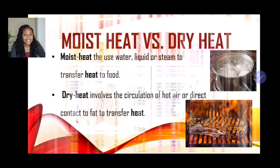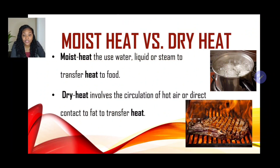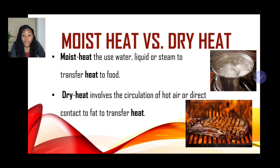Now let's dig a little deeper to look at moist heat versus dry heat, as we'll be looking at how these types of heat affect different carbohydrate foods. Moist heat, as the name suggests, uses moisture — water, liquid, or steam. Any food cooked using water, other liquids such as stocks, or steam falls into this category. Examples of moist heat cooking methods include steaming, stewing, and boiling.